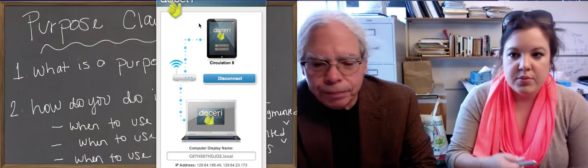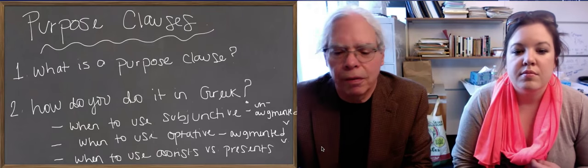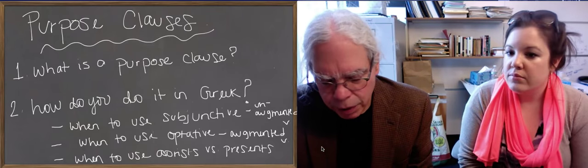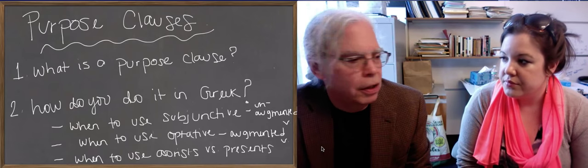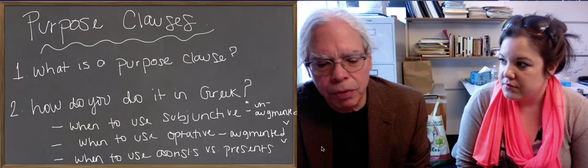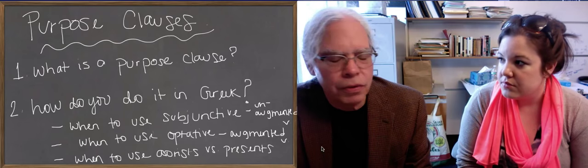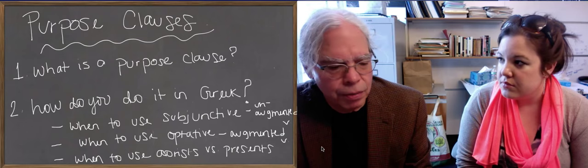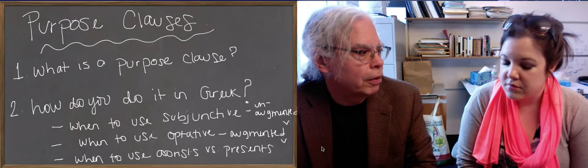So there's one or two other details about the way this works. One is that you have a choice in any given case, if you're an ancient Greek, between the aorist optative or subjunctive and the so-called present optative or subjunctive. And what makes you choose one or the other? Well, it's a matter of the aspect.